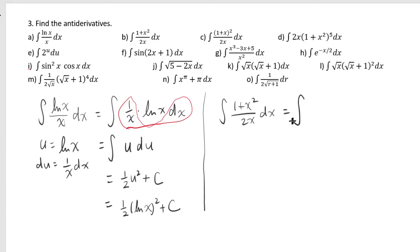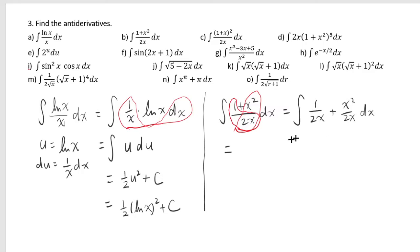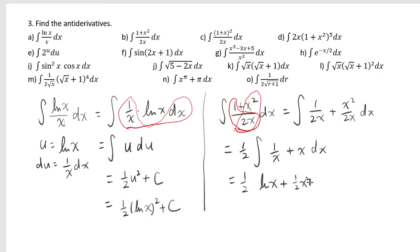You need to do a lot of practice problems until you see which strategy is necessary. For this one, you want to split this into two fractions: 1 over 2x plus x squared over 2x. Since 1 half is a common factor, you can pull that out, giving you 1 over x and x. The integral of 1 over x is ln of x, and the integral of x is 1 half x squared plus c. Multiplying by 1 half gives 1 half ln of x plus 1 fourth x squared plus c.